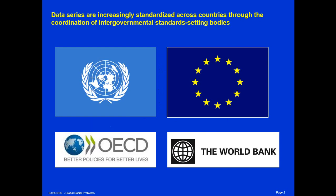Data series are increasingly standardized across countries through the coordination of intergovernmental standard-setting bodies. The best known is the United Nations, but also the European Union, standardizing data across the 28 EU member states, the OECD — the Organization for Economic Cooperation and Development — which standardizes data across some 30-something rich countries plus a few middle-income countries, and the World Bank, which produces standardized data for some 210 countries and country-like entities in the world.